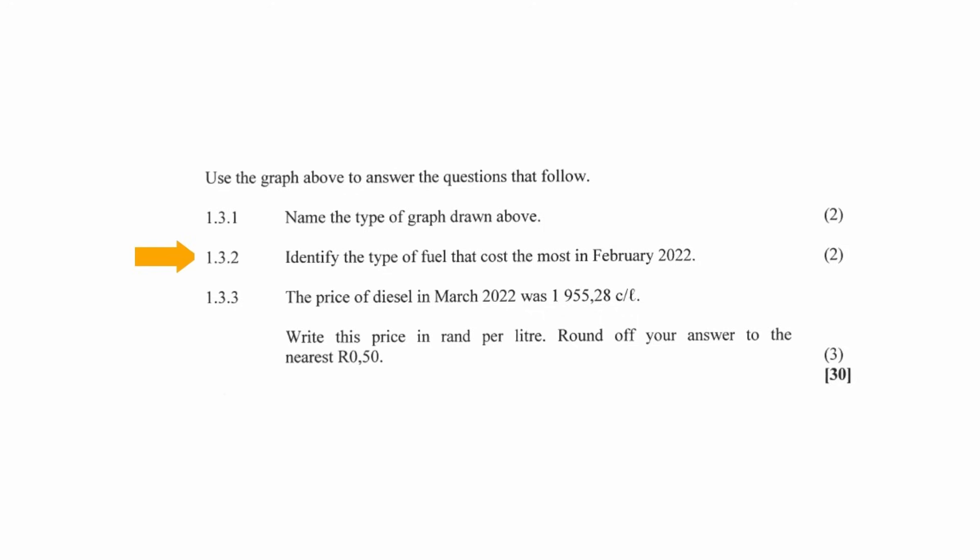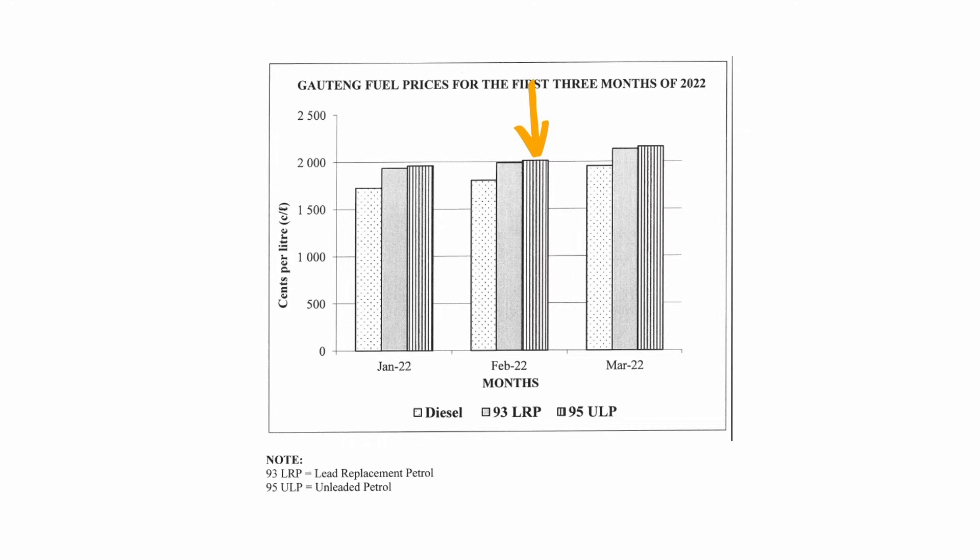In question 1.3.2, you have to identify the type of fuel that cost the most in February 2022. From the graph, the type of fuel that cost the most in February 2022 is 95 unleaded petrol.